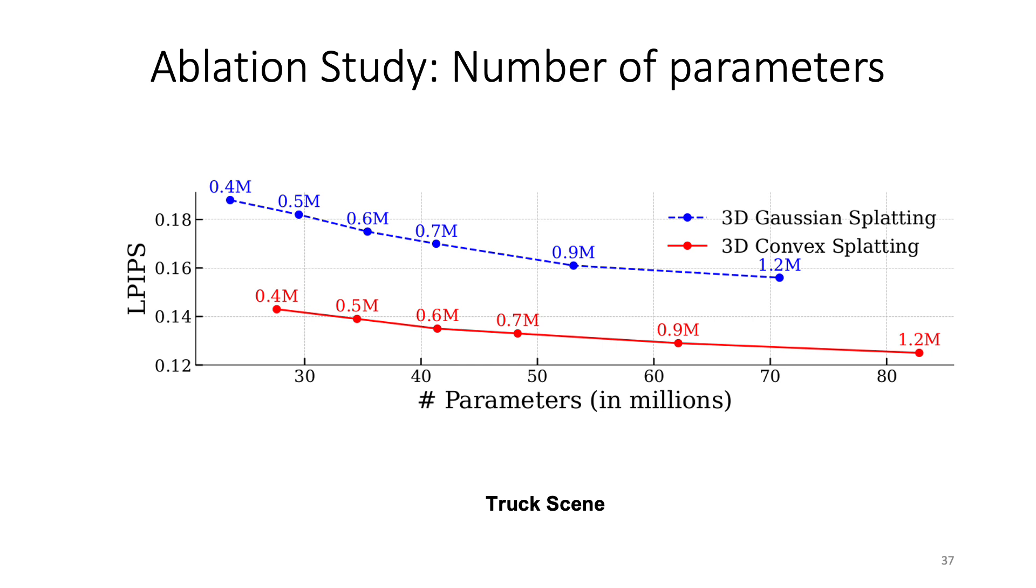Here we show an ablation of the number of parameters of 3D Convex Splatting compared to 3D Gaussians, and you can see that it obtains higher visual quality with smaller number of parameters and even smaller number of primitives, which is the highlighted number on top of the plots.